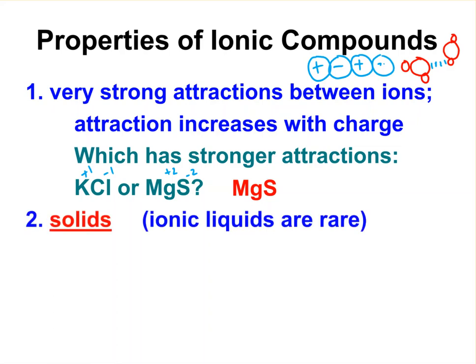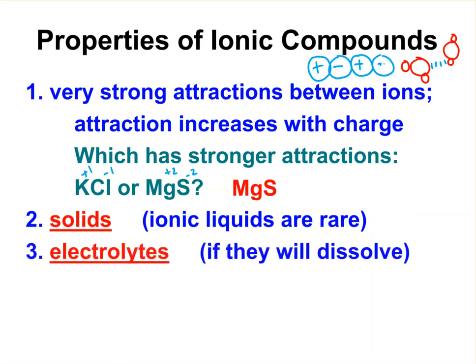So this is why the strong attractions are why ionic compounds are generally solids at room conditions. Ionic liquids do exist, but they're very rare. They involve very large, unusual polyatomic ions with resonance where the charge is really distributed over many, many atoms. But anyway, so they're kind of a novelty, but most of them are solids at room conditions. And as you already know, ionic compounds, if they dissolve in water, they are electrolytes.